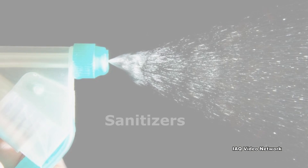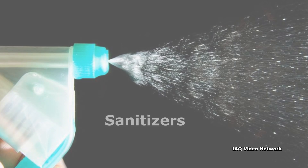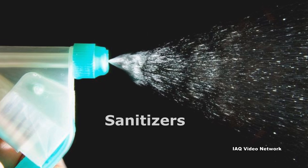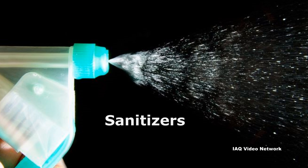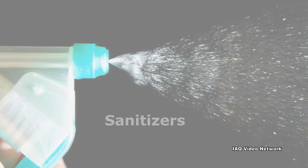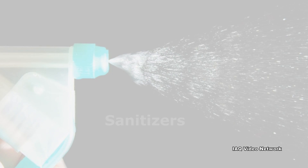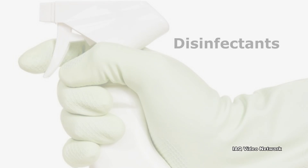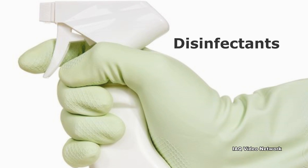Sanitizers are used to reduce germs from surfaces but do not totally get rid of them — they reduce germs to levels that are considered safe. Disinfectants are chemical products that destroy or inactivate germs and prevent them from growing.